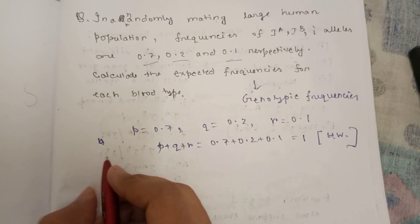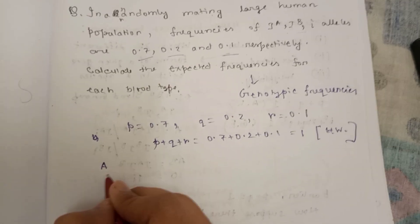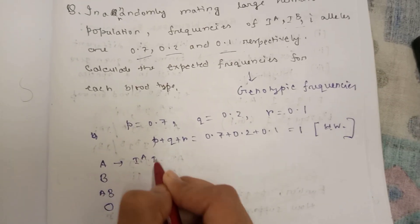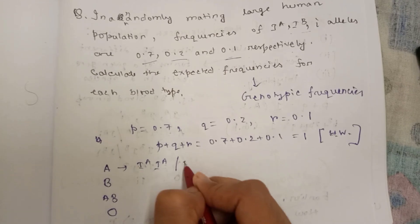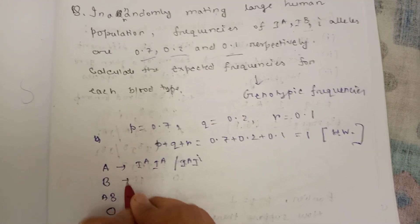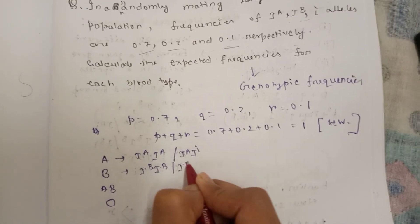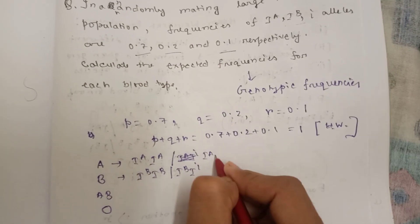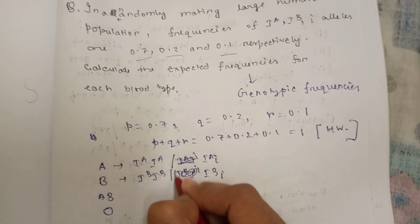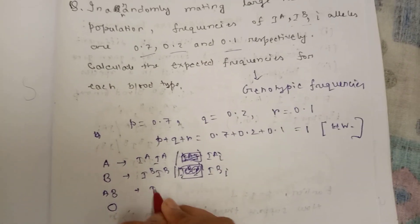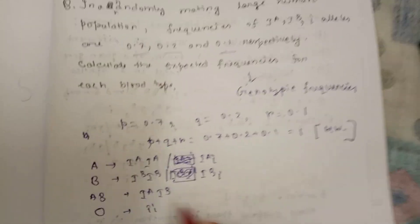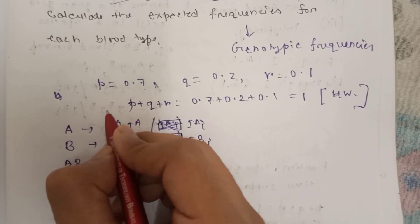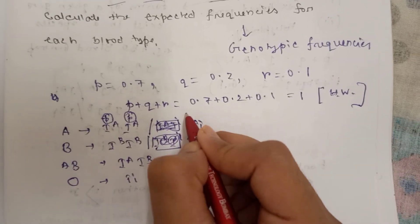Now there are four blood types, right? A, B, AB, and O. For A it has to be I^A I^A or I^A i. For B it has to be I^B I^B or I^B i. Let's see, I^A I^A means I^A is p and I^A is also p.